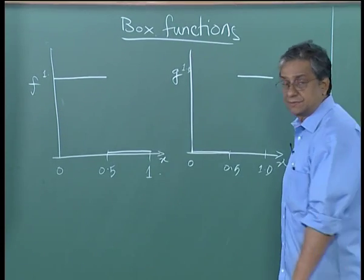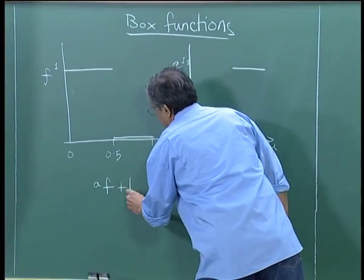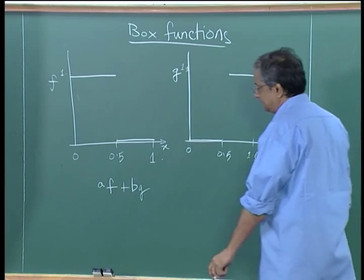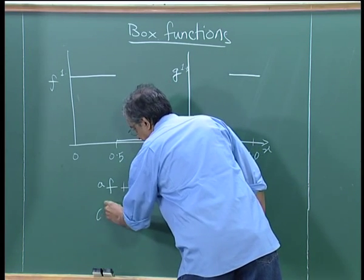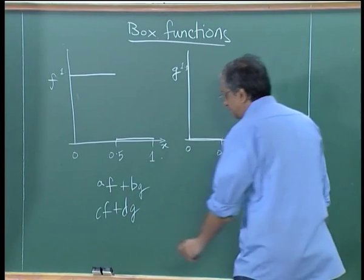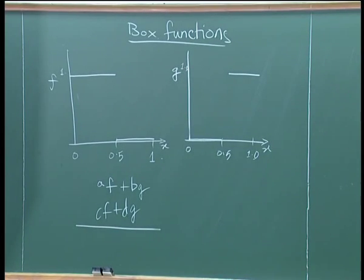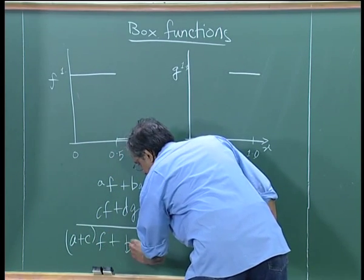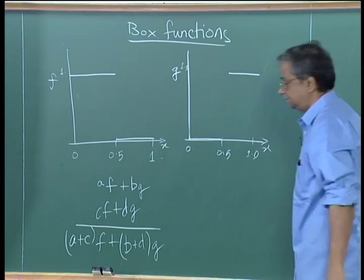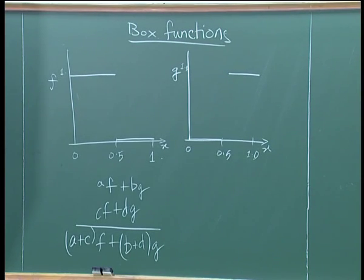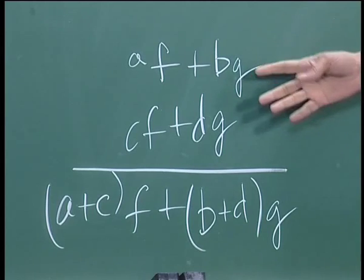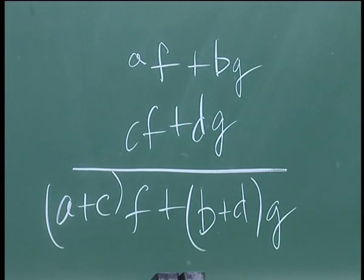If you consider a linear combination of these functions — af plus bg — just like in the case of vectors, if I took another linear combination cf plus dg, an addition of these two gives me (a+c)f plus (b+d)g, since they are defined on the same domain. We see that just as with usual vectors, we can do the vector algebra once we define the dot product.